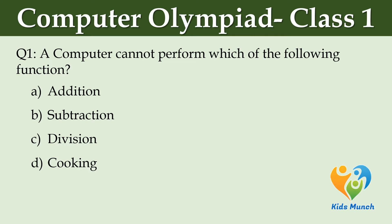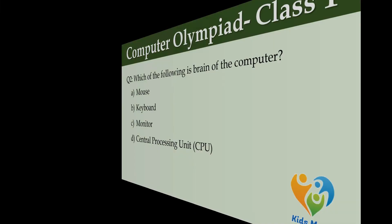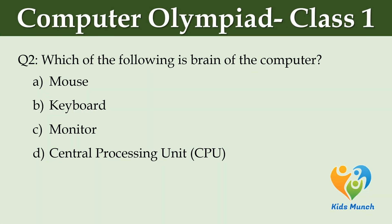Which of the following is the brain of the computer? Option A: Mouse. Option B: Keyboard. Option C: Monitor. Option D: Central Processing Unit, i.e., CPU.